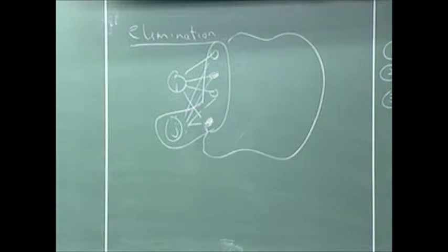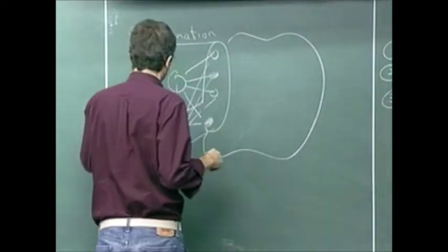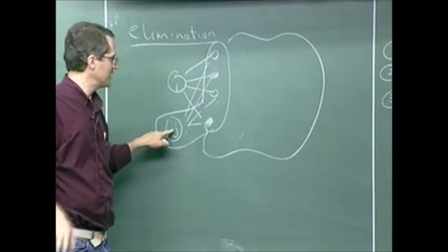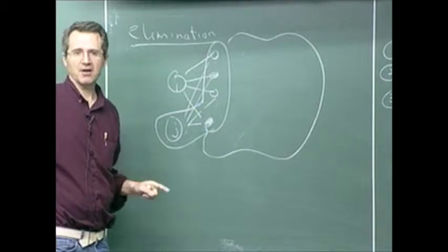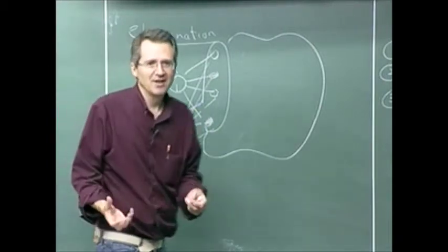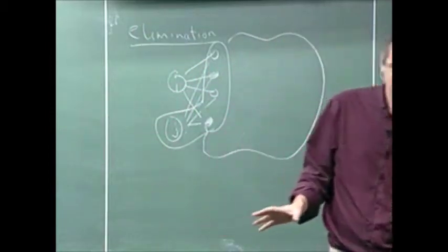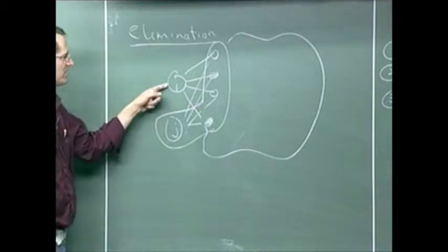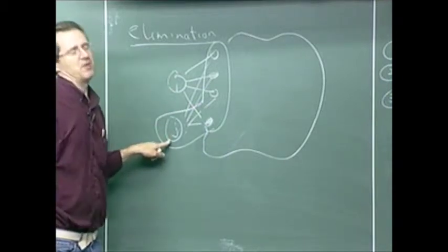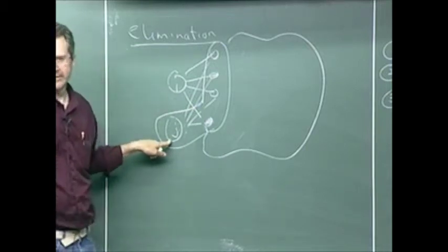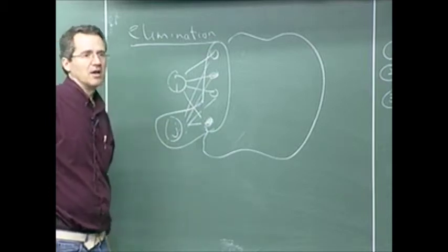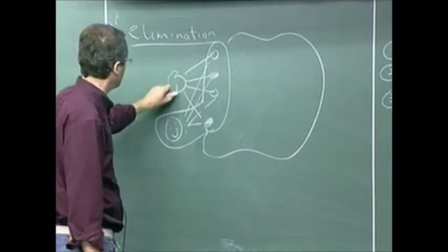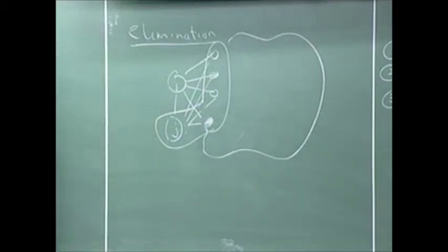Suppose we pick node i of least degree. Then a clique will be formed of its neighbors — j and also all the neighbors of j. j and all of its neighbors now form a clique. If I eliminate node j right now, I get no additional fill-in, because the neighbors of node j are already a clique. Since no new edges get created in the graph, I might as well eliminate it now.